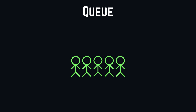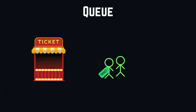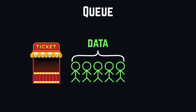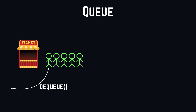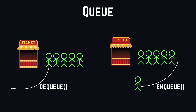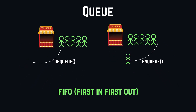The next data structure is called the queue, and it can be easily understood by thinking about waiting in line. Imagine you are at the movie theater buying a ticket — the person at the front of the line is the first one to get that ticket, while the person at the very end has to wait until everyone else has been served. To remove data from the queue we use dequeue, and to add new data we use enqueue. Both operations typically run in O(1) time. This principle is also known as FIFO — First In, First Out.